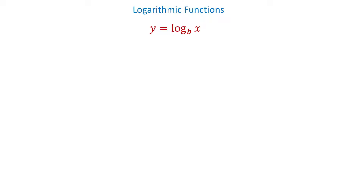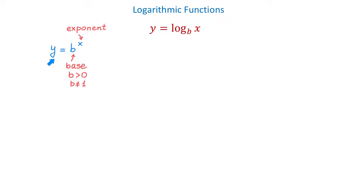The basic logarithmic function has the form y equals log base b of x. This function is the inverse of the exponential function. To understand it, let's talk about the exponential function y equals b to the x power. In this function, b represents the base, and this base has to be a positive constant that is not equal to 1. Then x represents the exponent, and y represents the result of raising base b to exponent x. For example, y equals 2 to the x power is an exponential function, and the base 2 is positive and is not equal to 1.